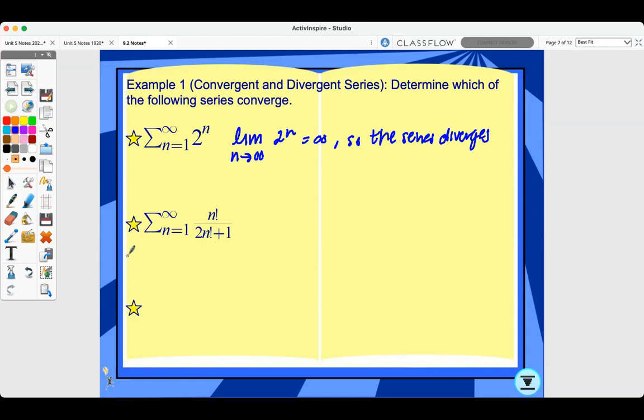The sum from n equals 1 to infinity of n factorial over 2n factorial plus 1. We need to find this limit as n approaches infinity of n factorial over 2n factorial plus 1, which equals 1 half. So the series diverges.